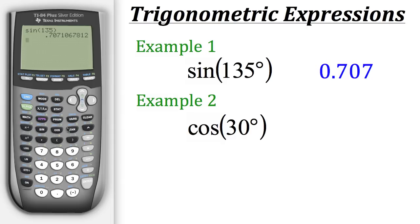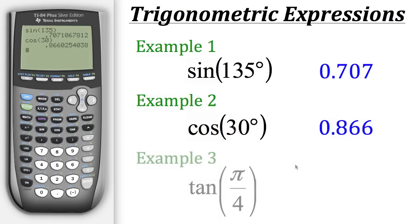To evaluate the cosine, we'll hit the cosine button right here, then type in our angle, which is 30. When we hit enter, we get a result of roughly 0.866.